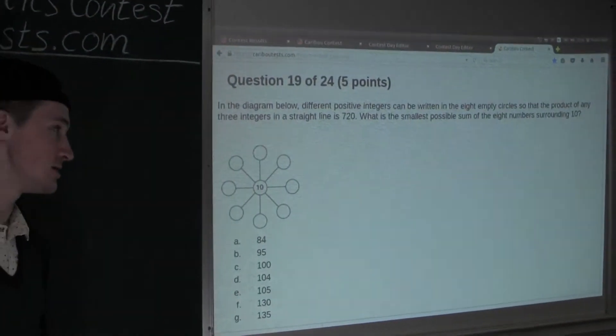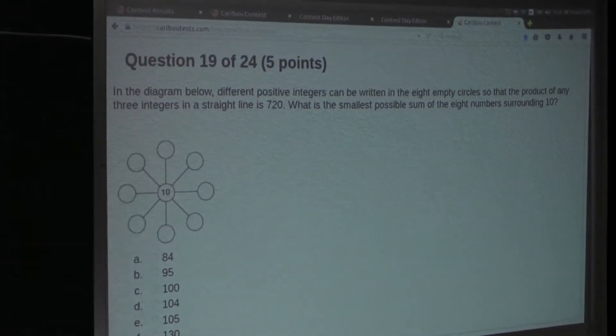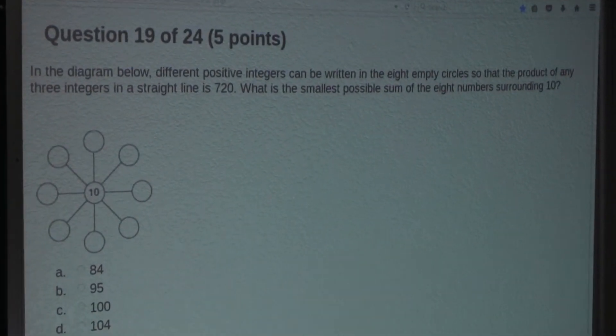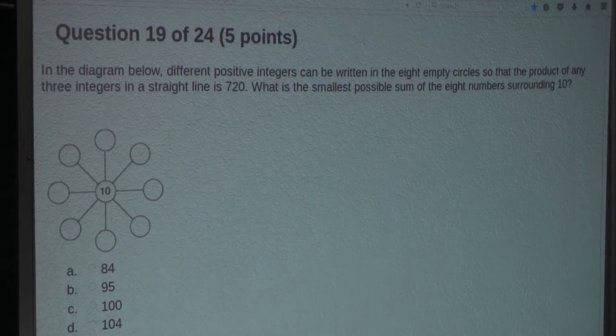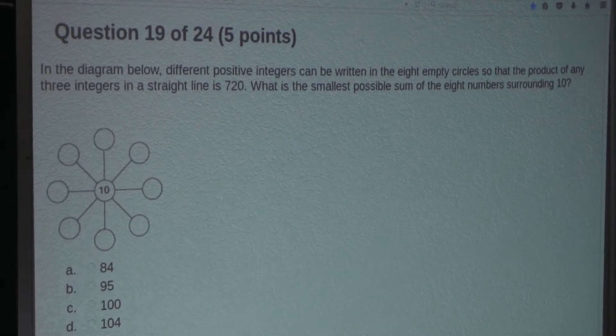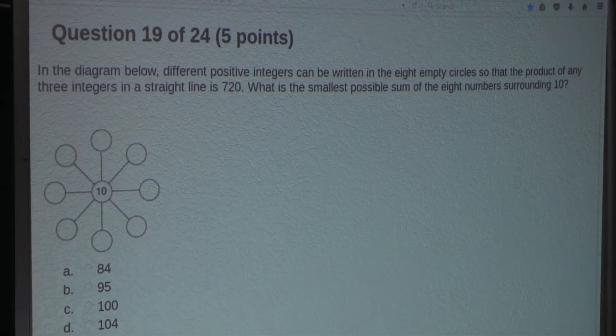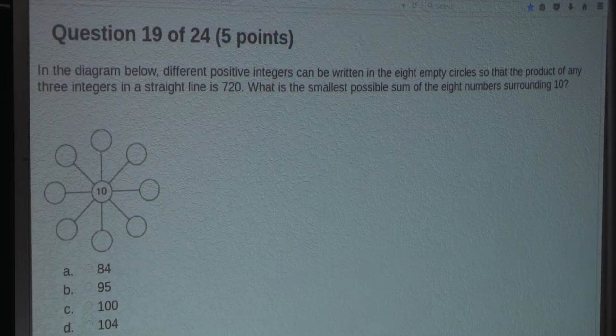So the question is, in the diagram below, different positive integers can be written in the 8 empty circles, so that the product of any 3 integers in a straight line is 720. What is the smallest possible sum of the 8 numbers surrounding 10?